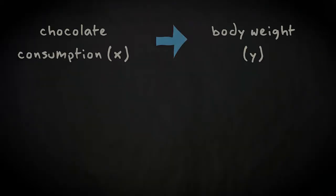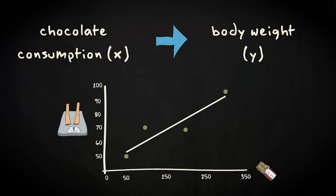For instance, research suggests that eating a lot of chocolate increases your body weight. And this scatterplot shows that the more chocolate people eat, the larger their body weight tends to be. However, we need to be careful here.